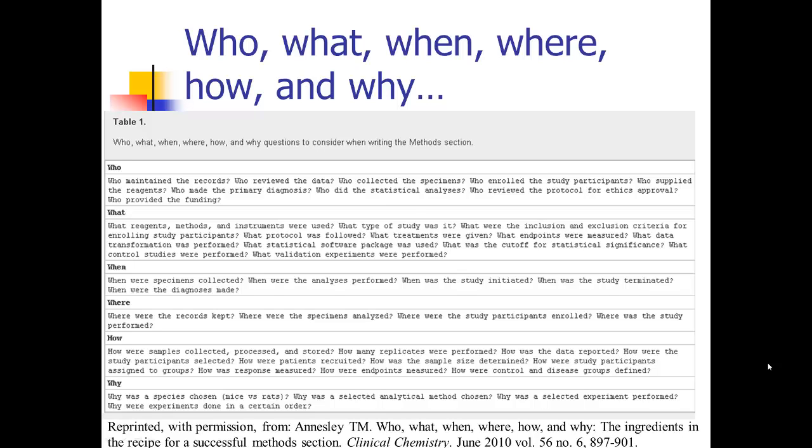And he goes into details for each of those. Who maintained the records? What was used? When was it done? Where were the records kept? So it's really kind of a nice checklist to go through as you're writing your method section. Not all of these questions will apply, but most of them will. And it really gets you thinking about all of the different things that need to go in your methods. So I really like this table.